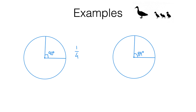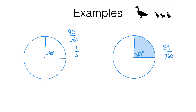But what fraction is it exactly? The key is to observe that in a full turn we have 360 degrees and this angle is just 89 degrees. So as a fraction of the full turn we've got 89 over 360, and in fact this part of the circle is 89/360 of the whole. This fits with what we saw in the first example, because 90 over 360 simplifies to one quarter — we've got 90 degrees out of a full turn of 360.